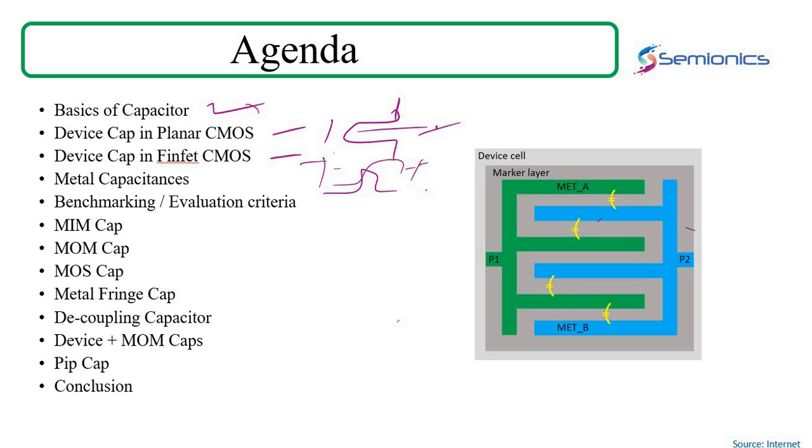Then we've got different varieties of capacitances that we come across when dealing with metals. Is it just parallel plate capacitor, or is it coupling capacitance as well, or are there fringe capacitances? How does a parasitic extraction tool extract the capacitances?